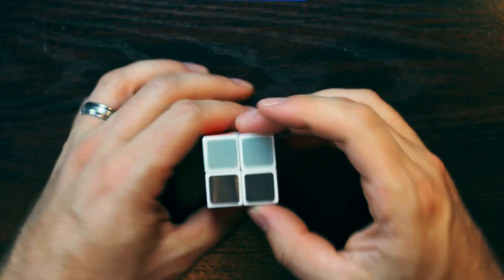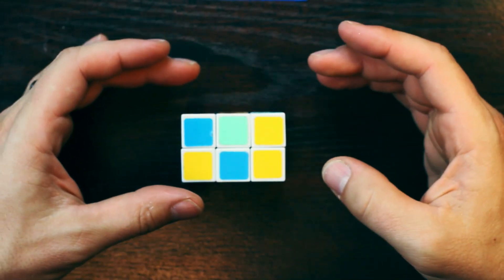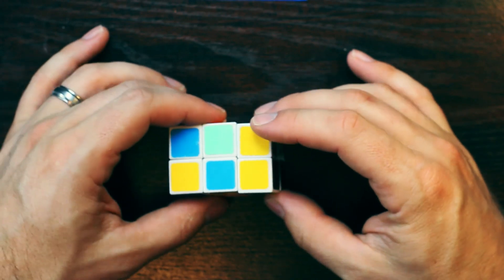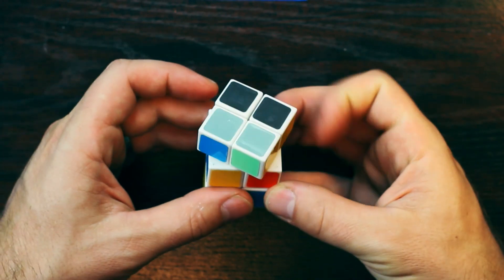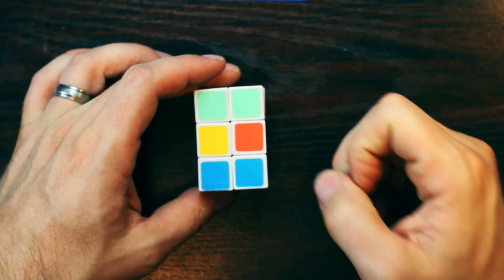Here we have the 2x2x3 twisty puzzle. Some call it a cuboid, and this one is fun. It is super easy to solve. You can solve it with just one algorithm.